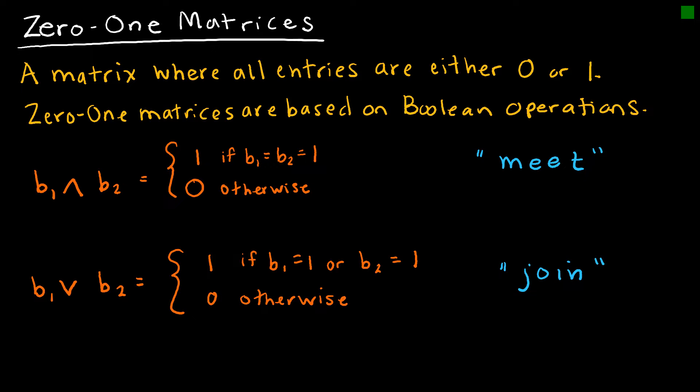Zero-one matrices are based on boolean operations. And notice here we've got b1 and b2. And notice this is called the meet. And the meet of a zero-one matrix gives us a value of 1 if b1 equals b2 equals 1. So basically we're saying if both values are 1 or if both values are true, then it's true. And this makes perfect sense with our AND operation that we had before. And if it's not true, then it's 0. So 0 otherwise.